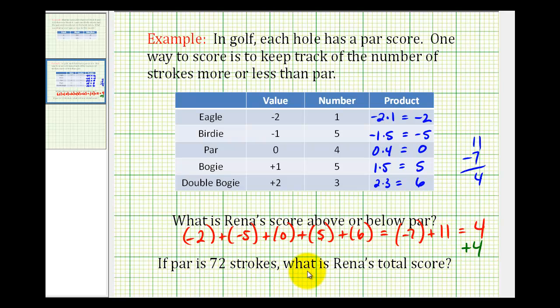So if par is seventy-two strokes, what is Rena's total score? Well if par is seventy-two and she scored four strokes above par, it would just be seventy-two plus four, which would equal seventy-six.